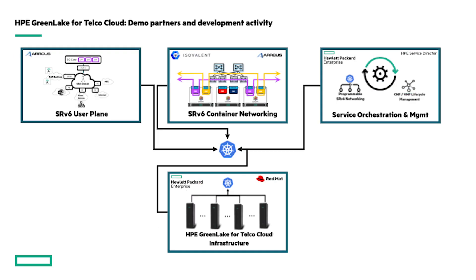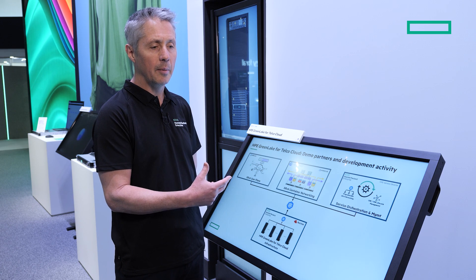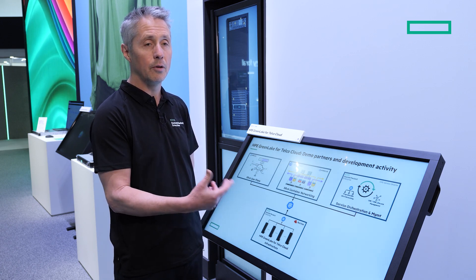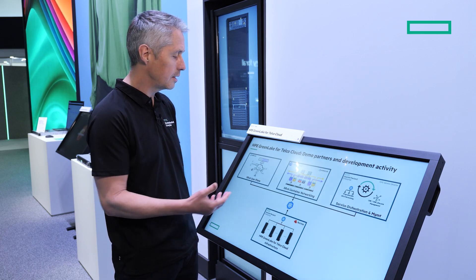There are four building blocks we've used to create this solution. Starting with the infrastructure — compute, storage, networking — all the physical and virtual resources that exist within that data center infrastructure are exposed through Kubernetes. You're then capable of configuring, for example, the physical compute nodes through Kubernetes operators for setting BIOS settings, changing boot paths, etc.